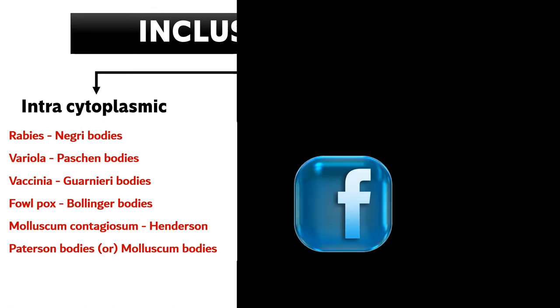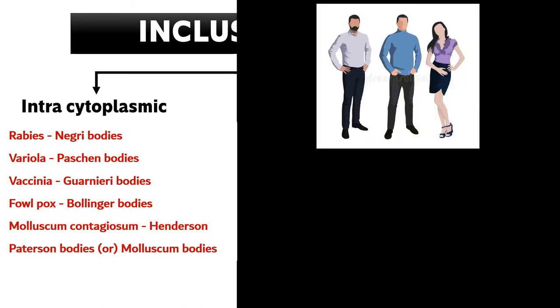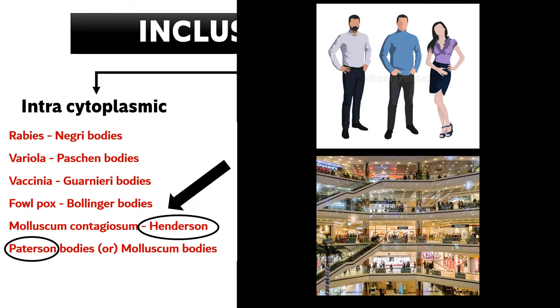In the vaccination center Rani met her Facebook friends. FB: F stands for fowlpox, B stands for Bollinger bodies — in fowlpox we have Bollinger bodies. Those friends' names are Henderson and Paterson. Together they decided to go to a mall. The spelling of mall is M-A-L-L, but remember it as M-O-L-L so that you can connect molluscum contagiosum with Henderson, Paterson, and molluscum bodies.